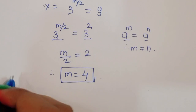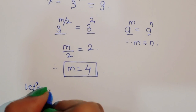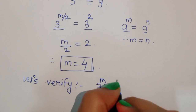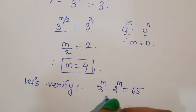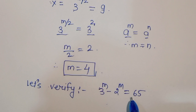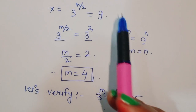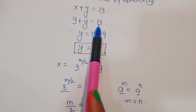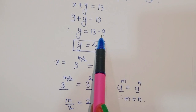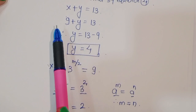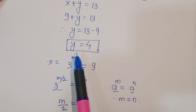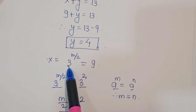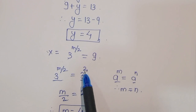Now let's verify this value. We verify: 3 power m minus 2 power m is equal to 65 — this is the given question, we have to verify whether the value of m is right or not. We already assumed x equals 3 power (m by 2). Therefore 3 power (m by 2) is equal to 9, which equals 3 squared. The base is the same, so m by 2 is equal to 2, giving m equal to 4.